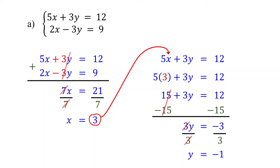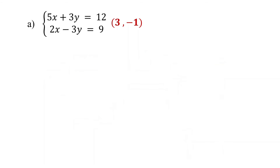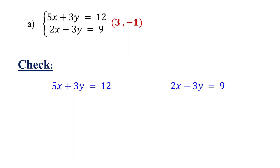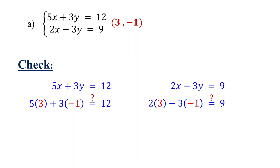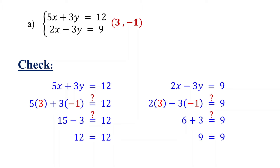Finally, write your solution as an ordered pair, (3, -1), with x equal to 3 and y equal to negative 1. If you were to plot the graphs of these two equations, the lines would intersect at the point (3, -1). We can confirm this solution by substituting it into both original equations. In the first equation, 5 times 3 is 15, and 3 times negative 1 is negative 3, giving 15 minus 3 equals 12. In the second equation, 2 times 3 is 6, negative 3 times negative 1 is positive 3, and 6 plus 3 is 9. Both equations are satisfied, confirming that (3, -1) is indeed the solution.